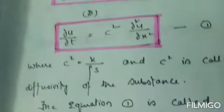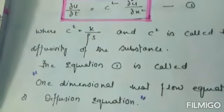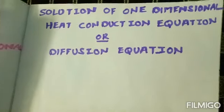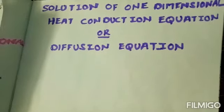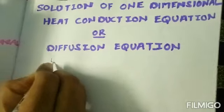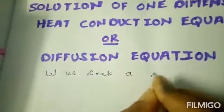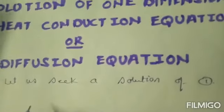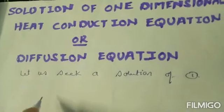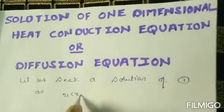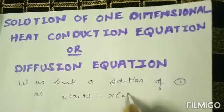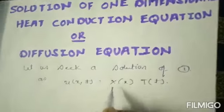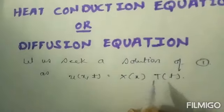Now let's find the solution of the one-dimensional heat conduction equation. We seek a solution by assuming u(x, t) = X(x) · T(t), where X is a function of x only and T is a function of t only.